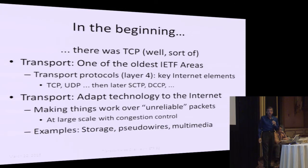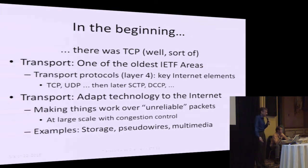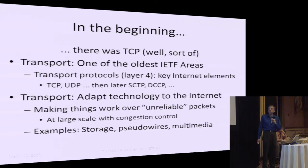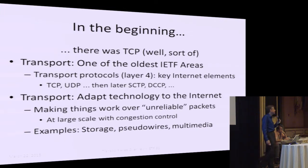Let's talk about where we came from. In the beginning, there was TCP — well, sort of. Transport is one of the oldest areas in the IETF. In order to make the Internet work, we had to have protocols that actually transport data around. We started out with TCP, a reliable stream delivery protocol, and UDP, an unreliable datagram protocol. Then we got SCTP — originally signaling control transport protocol — and DCCP, datagram congestion control protocol.